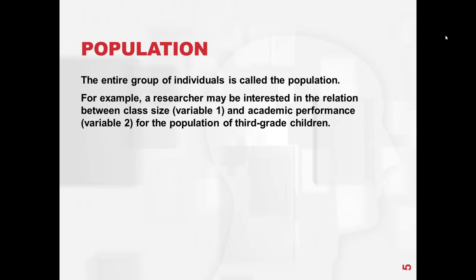So what is a population? The entire group of individuals is called a population. For example, a researcher may be interested in the relation between class size — which is variable 1 — and academic performance — which is variable 2 — for the population of 3rd grade children.